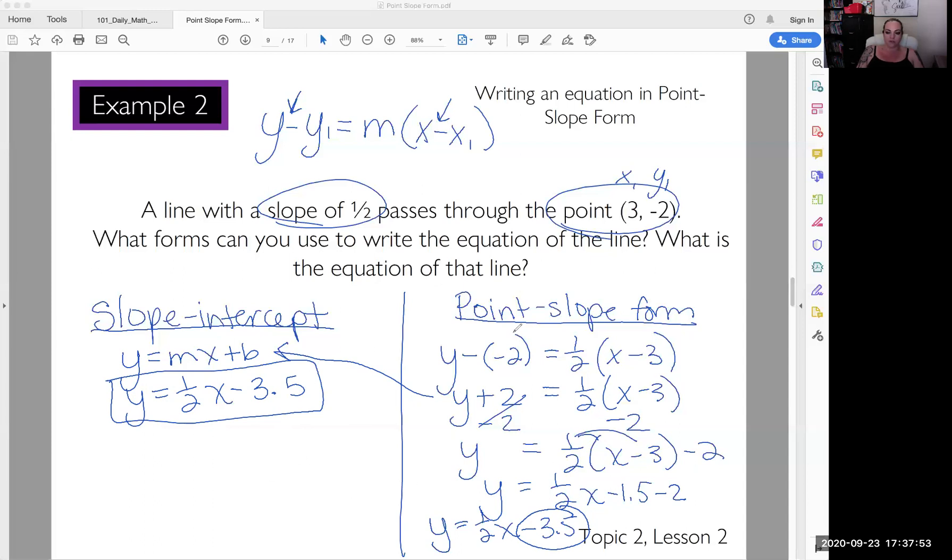So the overall gist is if you're given a slope and a point, write your equation in point slope form. Then use your property skills, distributive property, being able to rewrite equations, use those skills to get it into slope intercept form, and then you'll know the y-intercept. Pretty sweet.